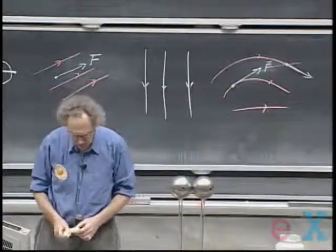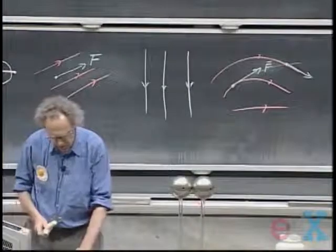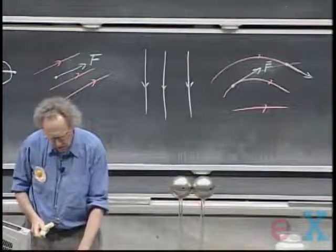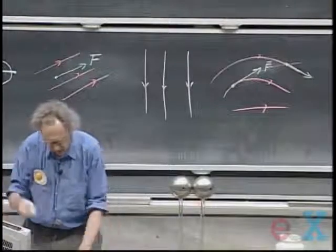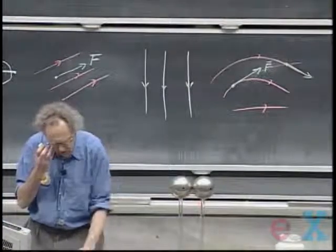So field lines are not trajectories, and not even when you release a charge with zero speed. Only in case that the field lines are straight lines.